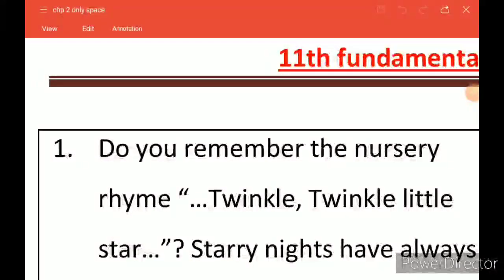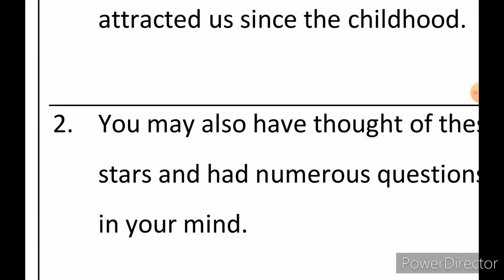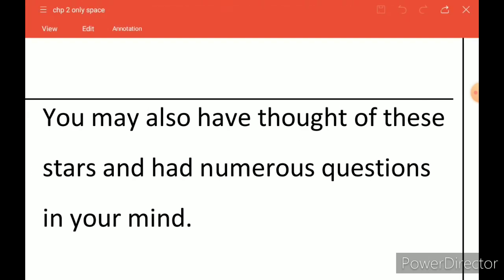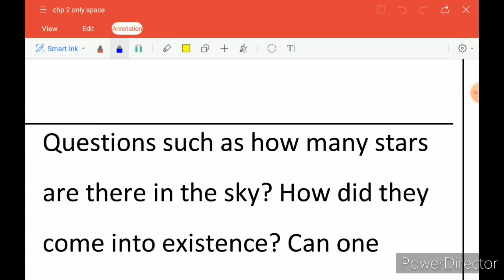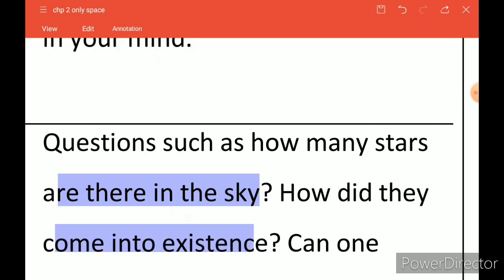We take on Chapter 2 of Class 11th Geography. The name of the chapter is Earth, so in this chapter we will cover how the Earth originated, how planets originated, and how satellites were formed. If you remember from nursery life, we used to sing 'Twinkle Twinkle Little Star' and were very curious in childhood to know what a star means. We used to look at the sky and many questions would come to mind, like how many stars are there, and how they come into existence.